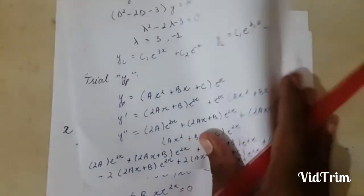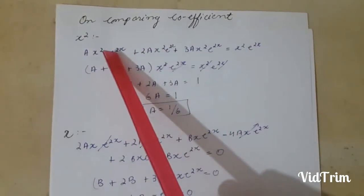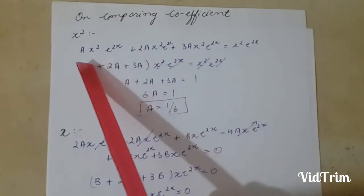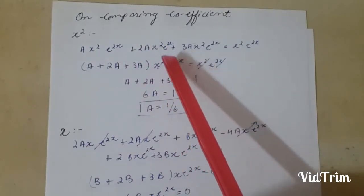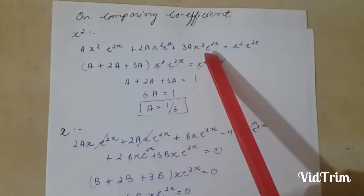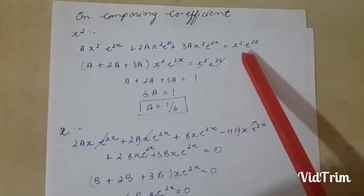Now on comparing coefficients, first of all I am comparing x squared. So I have a x squared e^x plus a x squared e^x plus 3a x squared e^x equals x squared e^x.